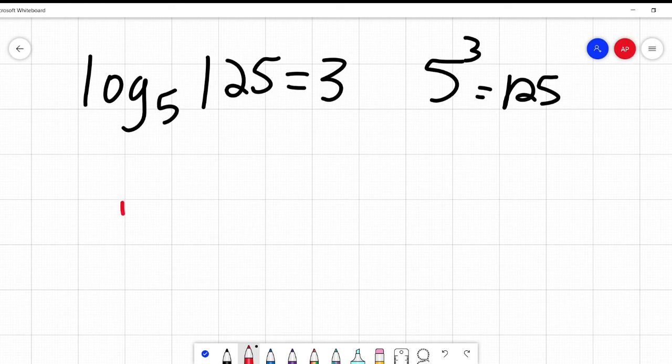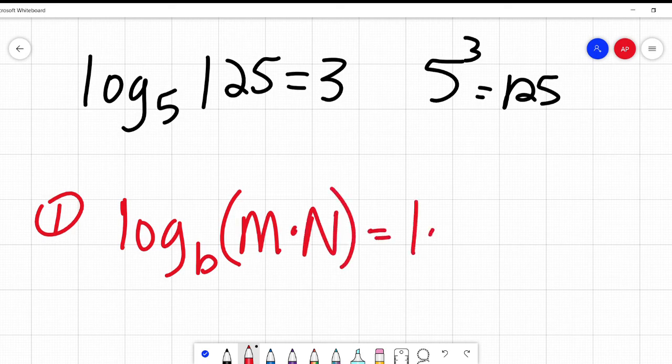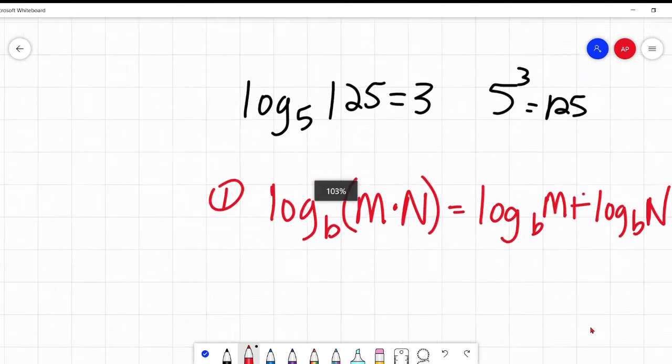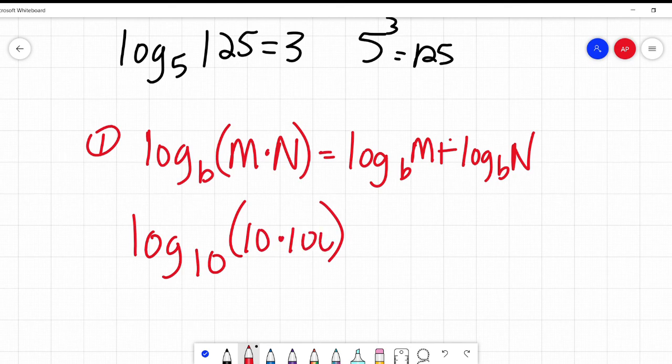First rule says log base B of M times N equals log base B of M plus log base B of N. There's a lag here, a lag and a log on my whiteboard. So there's rule number one. Let's put some real numbers in this to see if this makes sense. Let's try these with log base 10 because I think those are pretty easy.